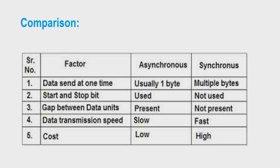Dear students, in this lecture we have studied the meaning of parallel communication and serial communication. We studied serial communication in detail, including its two types: asynchronous communication and synchronous communication. We also studied the synchronous IBM bi-sync protocol and compared the performance of asynchronous and synchronous communication based on many factors.